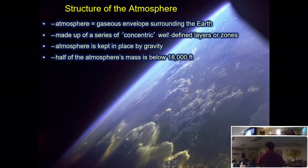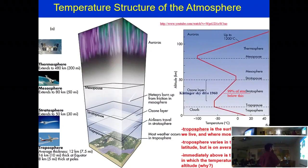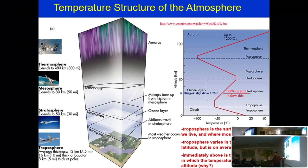Water vapor is invisible. When you look at a cloud, you're not looking at water vapor — you're looking at liquid water droplets. The atmosphere is a gaseous envelope surrounding the earth with concentric layers. In this class we're really only going to talk about the troposphere, since we're interested in wind, weather patterns, and things that affect the ocean.